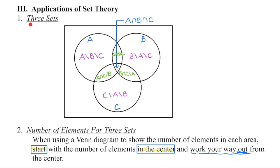If we add a third set to our Venn diagram, the same principle applies where we always want to begin in the middle and then work our way out. This middle section indicates elements belonging to sets A and B and C. From there, this section represents elements belonging to A and C but not B — so this is A and C, but not B, right in this section here.